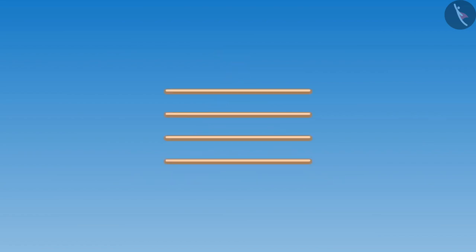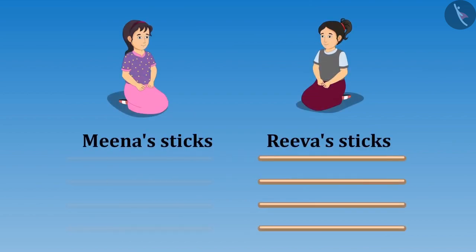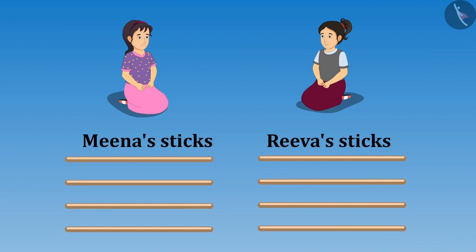Absolutely right Riva. Come on, we will form a figure with four sticks of equal length. So here are your four sticks and here are my four sticks.